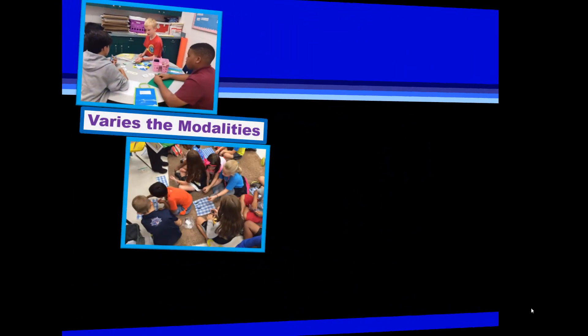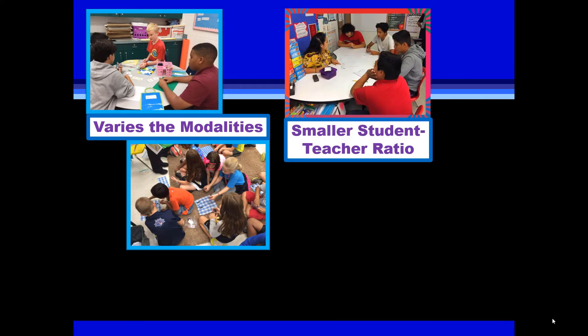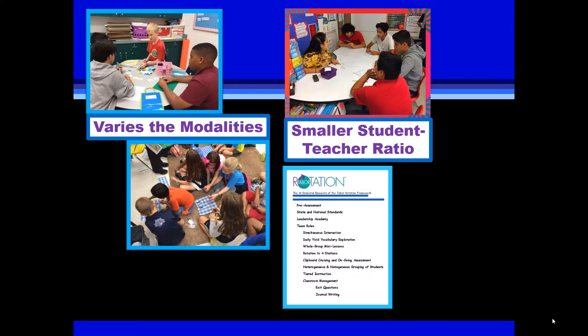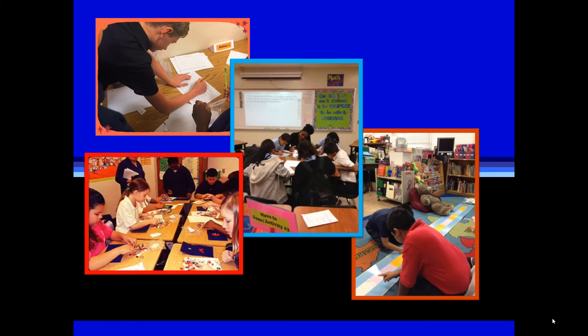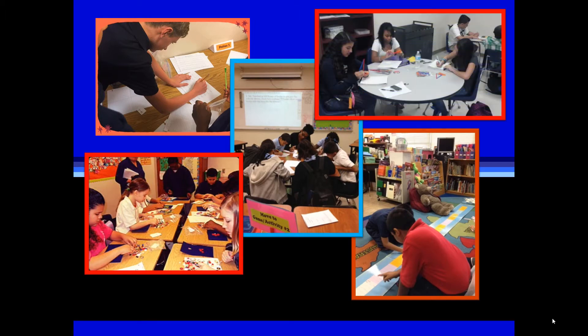Tabor Rotation varies the modality through which students learn concepts. It provides for a smaller student-teacher ratio for instructing every student in the room, and it does this through its 14 essential elements that occur in three phases of instruction. Tabor Rotation asks teachers to create a continuum of conceptual understanding, which provides learning experiences for all students, no matter their level, in order to move them a little bit further than they were the day before.